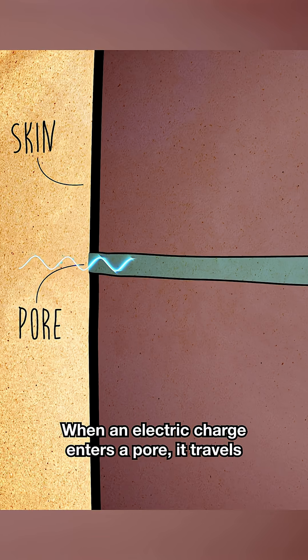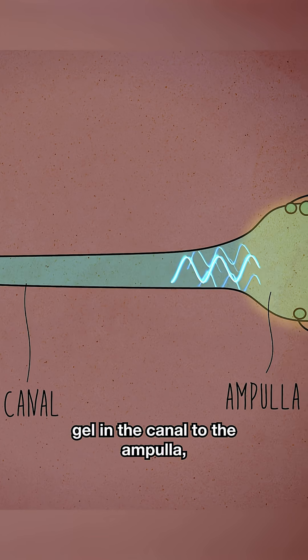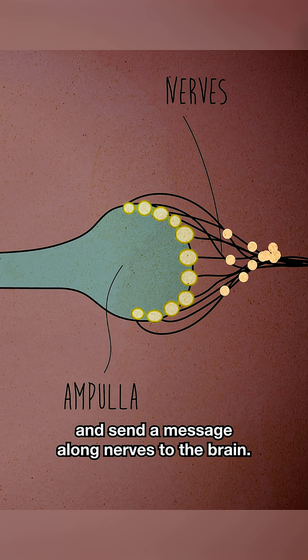When an electric charge enters a pore, it travels through the highly conductive gel in the canal to the ampulla, where special cells detect the current and send a message along nerves to the brain.